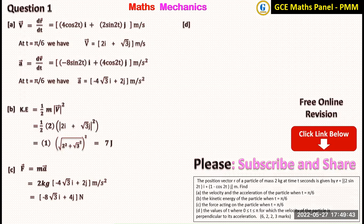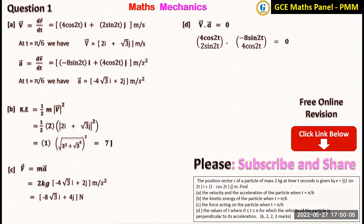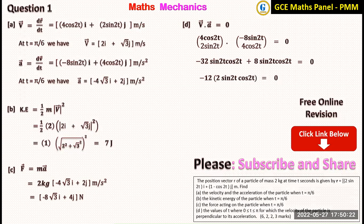The last part of this question asks us to find the values of t from 0 to pi for which the velocity of the particle is perpendicular to the acceleration. Velocity is perpendicular to acceleration when their dot product equals zero. Taking the dot product of velocity (4 cos 2t, 2 sin 2t) and acceleration (minus 8 sin 2t, 4 cos 2t), we get minus 24 sin 2t cos 2t equal to zero. Factoring out minus 12, we have 2 sin 2t cos 2t equal to zero.